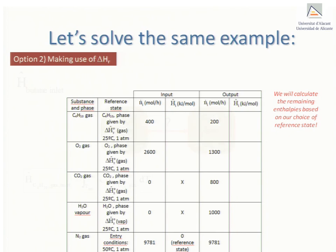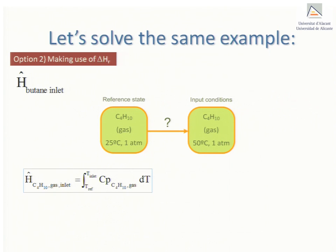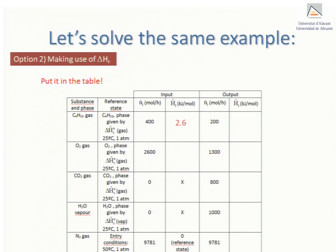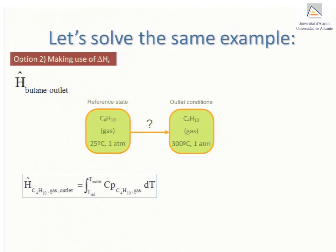So for butane gas in the inlet the molar enthalpy we seek is just the integral of Cp between the reference temperature and that of the inlet. When we evaluate this integral we get 2.6 kJ per mole which we put in our table. We now turn to the butane gas in the outlet. Following the same steps and integrating between the reference and outlet temperatures we get a molar enthalpy of 36.5 kJ per mole.